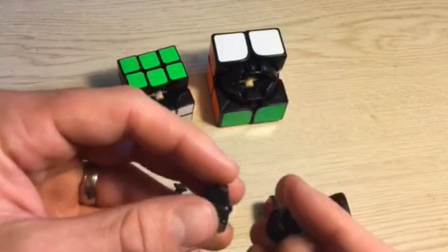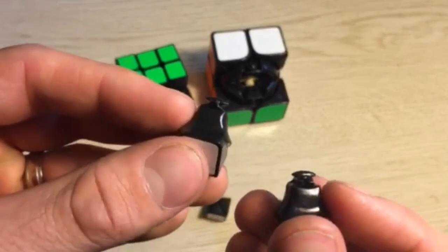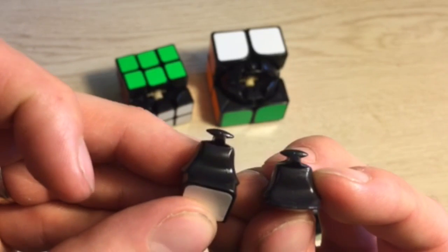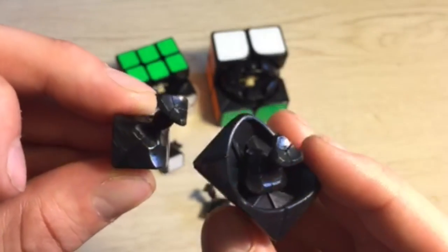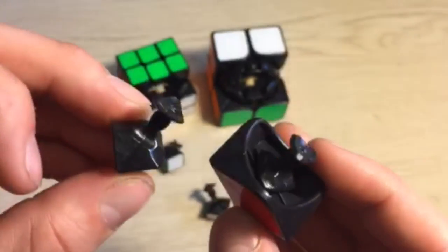If we look at the edge pieces of a 3x3, we can see that they look exactly like an internal piece of the 2x2. Also, the corners of the Zanchi look exactly like the corners of the 2x2.